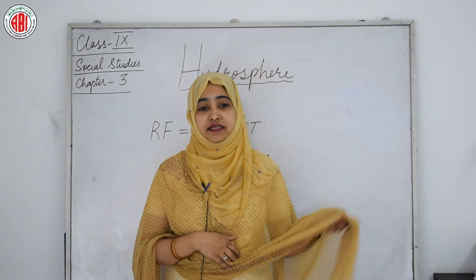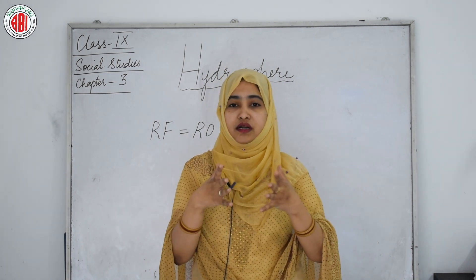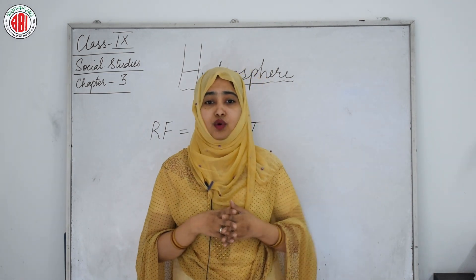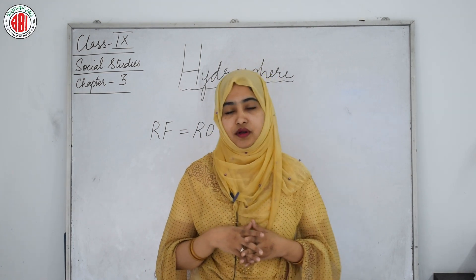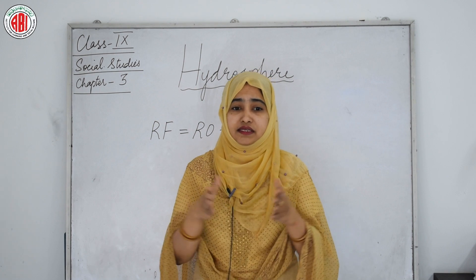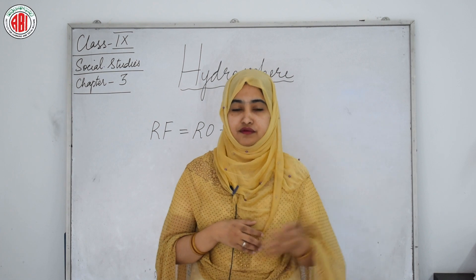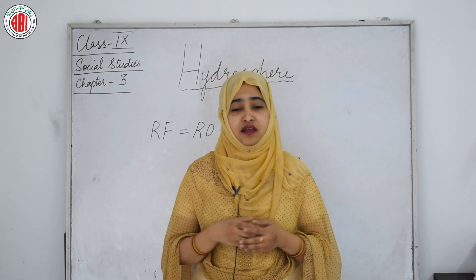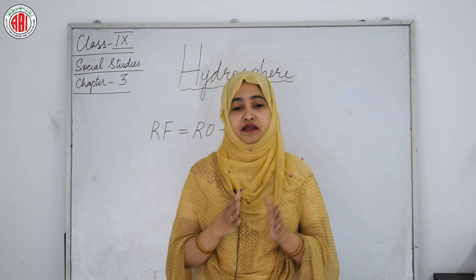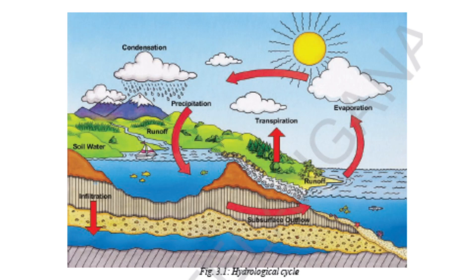Under special circumstances, groundwater can even flow upward in artesian wells. The flow of groundwater is much slower than runoff. The hydrological cycle is not a simple process of circulation of water between the ocean, atmosphere, and land — there are a number of sub-cycles operating within it.